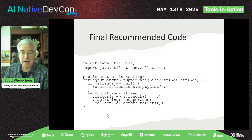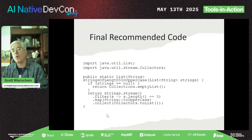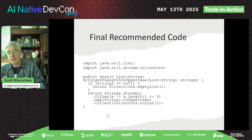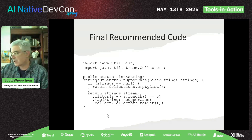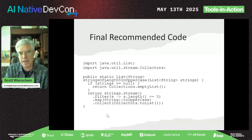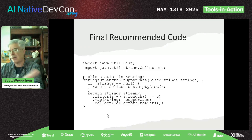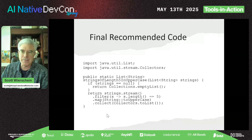Why might toUpperCase change the string's length or have Unicode side effects? In Unicode, some characters change when uppercased. For example, one of the AIs noted that the German beta character (ß) turns into 'SS' when uppercased — so one character becomes two.